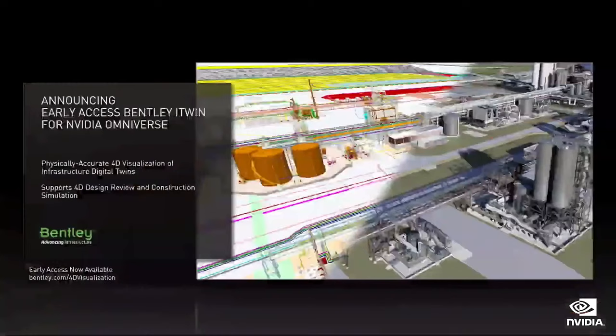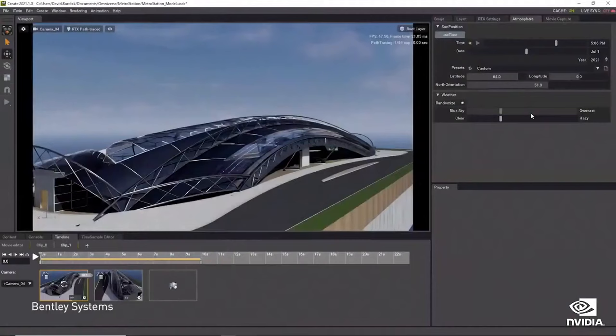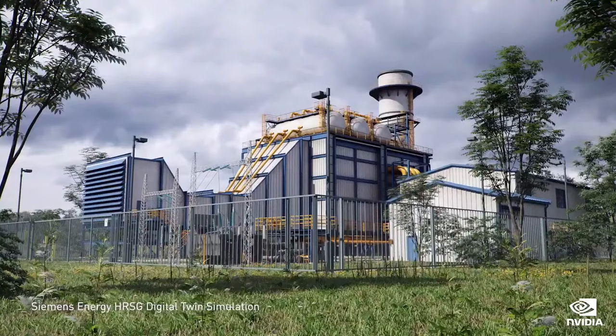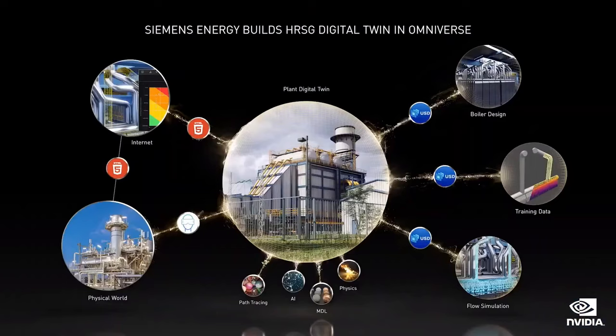Bentley announced that iTwin with Omniverse is now in early access. Bentley is not just connecting to Omniverse — they're building their digital platform on it. Bentley is used by 90% of engineering firms and has nearly 2 million users. Heat Recovery Steam Generators, or HRSG, converts hot gas out of a combustion turbine into steam, which drives a steam turbine to generate electricity. Corrosion is certain, so inspection and maintenance are needed. Siemens Energy estimates that by predicting corrosion accurately, they can reduce inspection during regular maintenance and unplanned downtime by 70%, saving the industry nearly $2 billion a year.